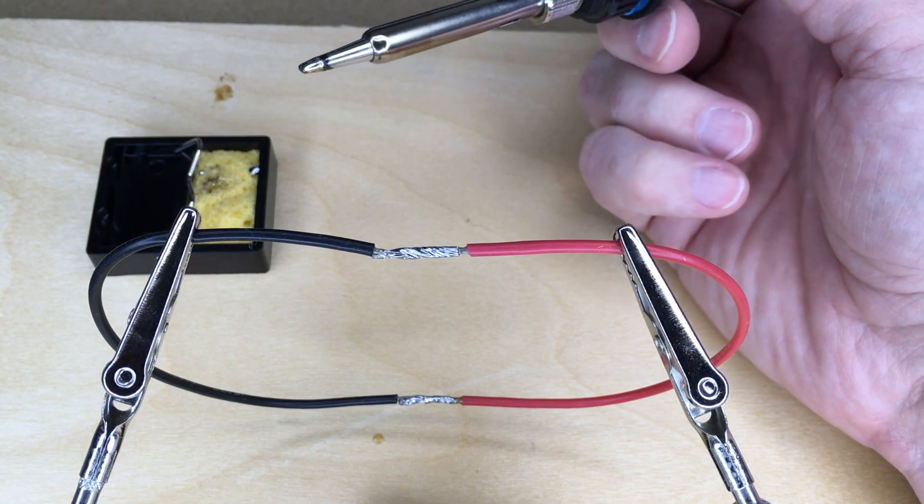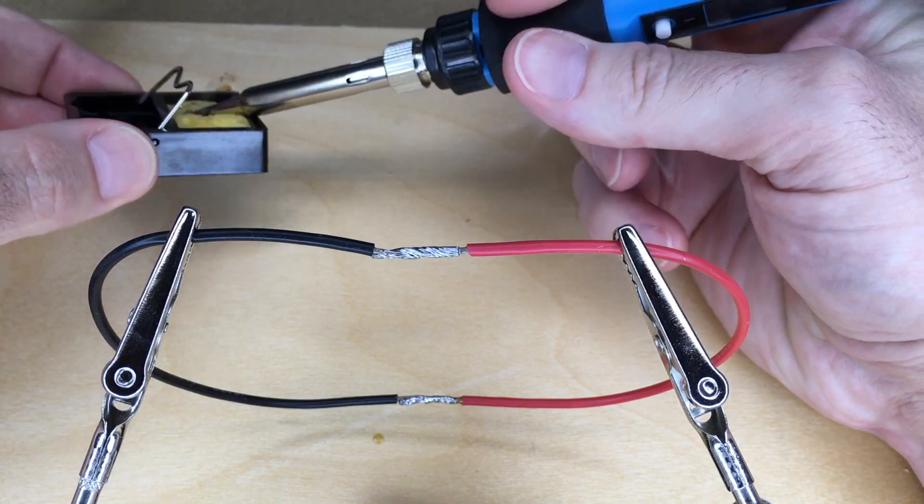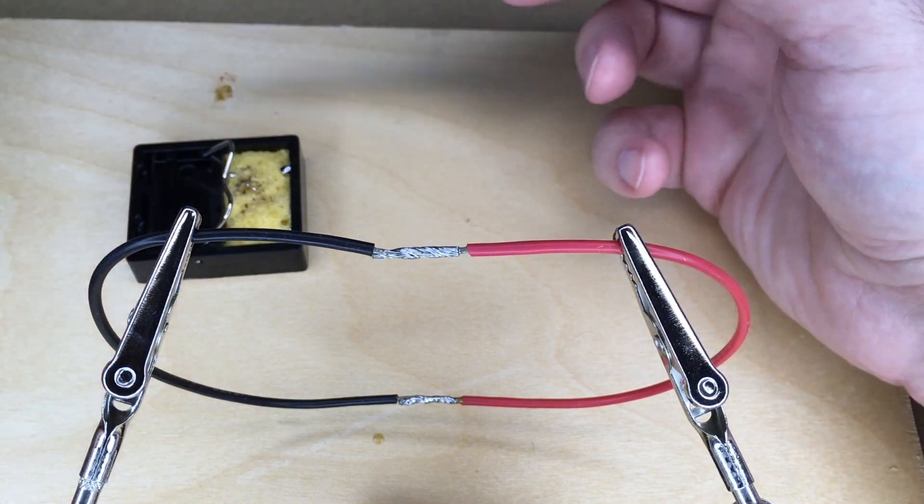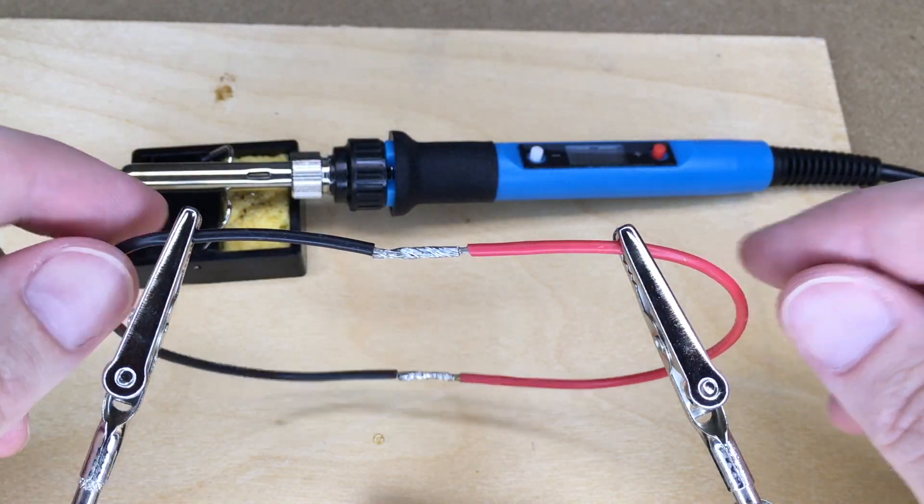That should be a pretty good solder joint. You don't want to pour water on that or anything. Just let it cool naturally. Then I can use the sponge here to clean off my tip. There we go. And now we have a nice solder joint.